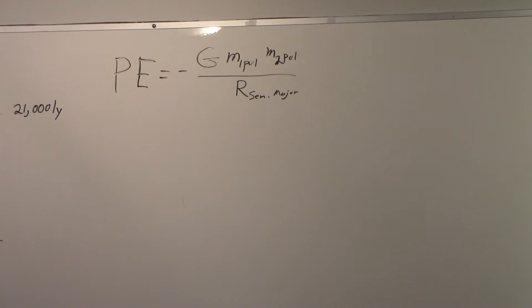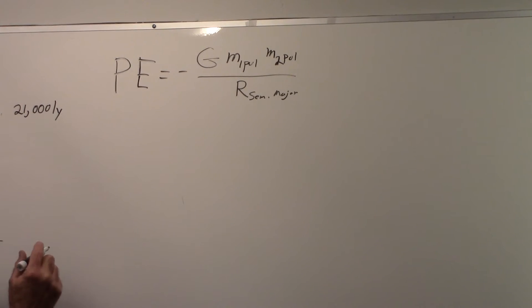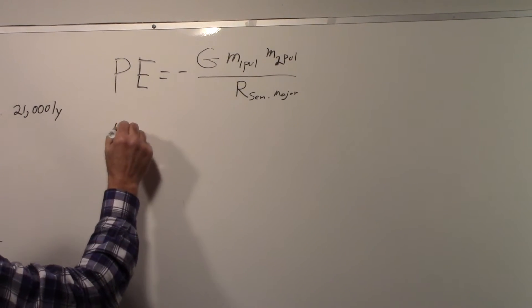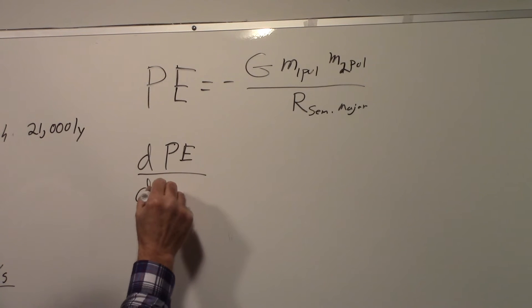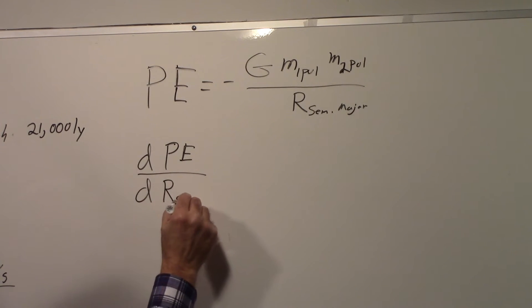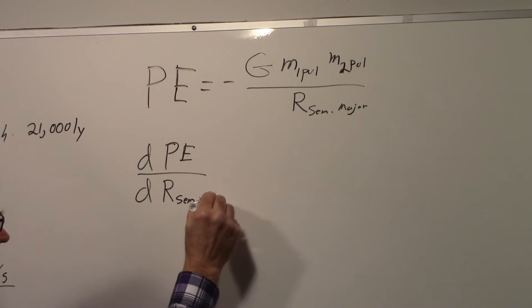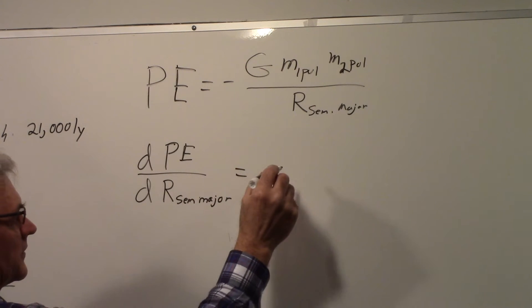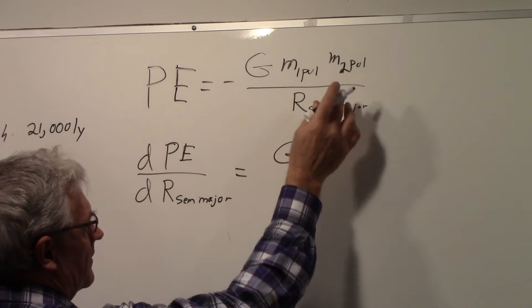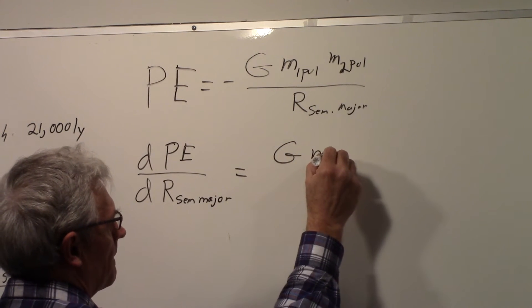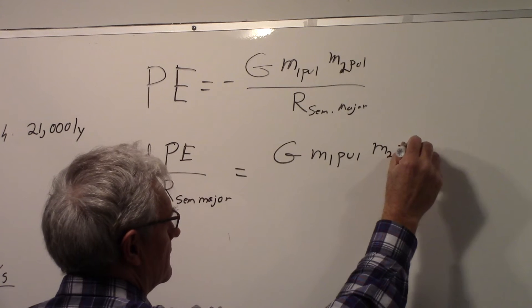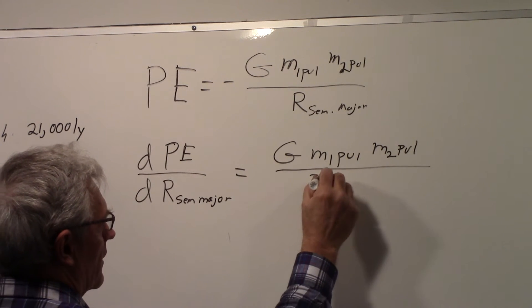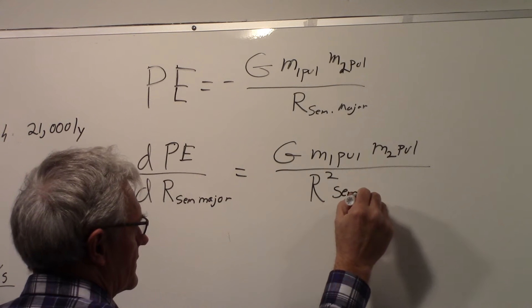Now the pulsars are spiraling in towards one another, so this distance is changing. So we can think of the derivative of the potential energy with respect to the semi-major axis. And that would be equal to the same numerator, gravitational constant times mass of pulsar 1, mass of pulsar 2, divided by r squared, representing the semi-major axis.